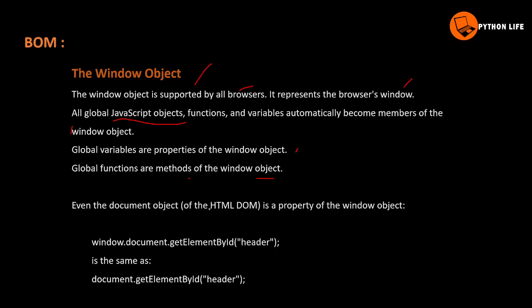Even the document object of the HTML DOM — the Document Object Model — is a window object property. So the document object is a property of the window object.